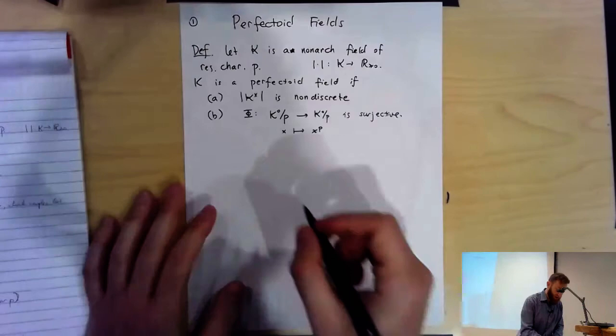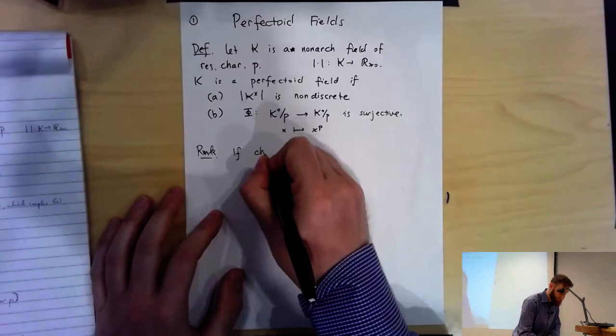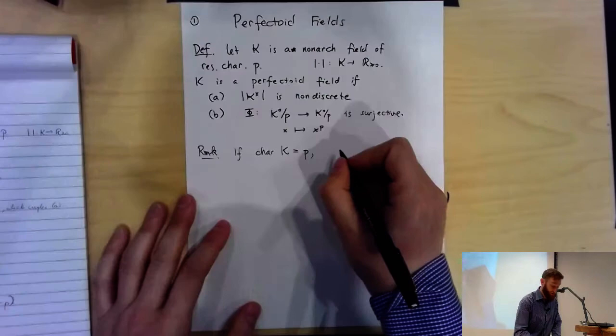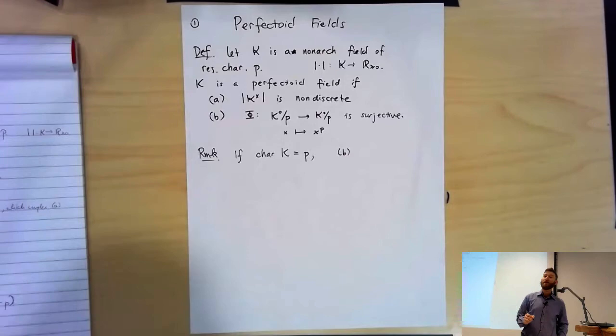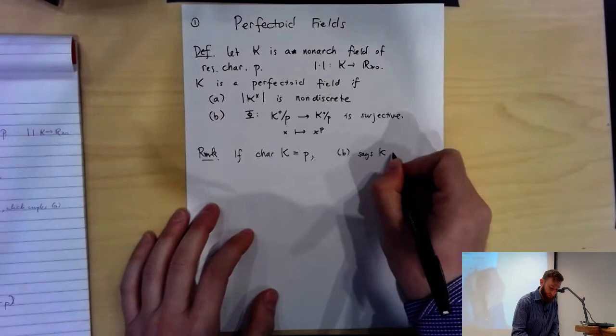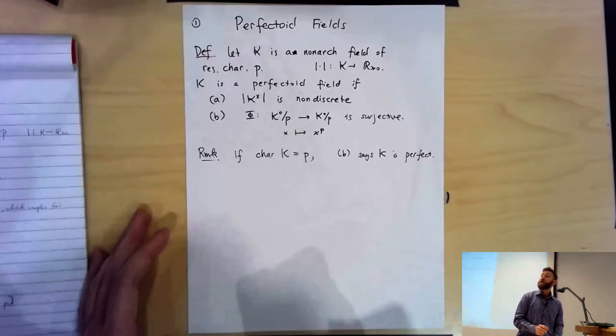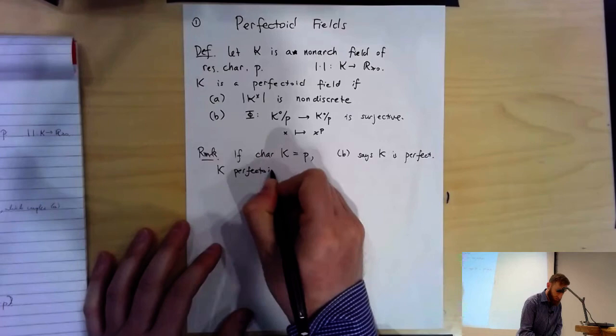Just as a remark, I never said anything about K being characteristic zero. K could well be characteristic P. And if the characteristic of K is P, then P is zero in K, so condition B is just saying that the Frobenius map is surjective on K. But it's a field, so it has to be an isomorphism — so K would have to be perfect. Thus B says K is perfect, and this actually implies condition A, making A redundant. So for a non-Archimedean field of characteristic P, K is perfectoid if and only if K is perfect.